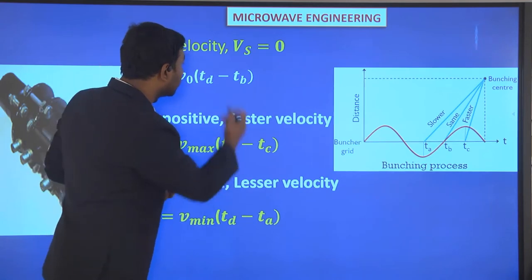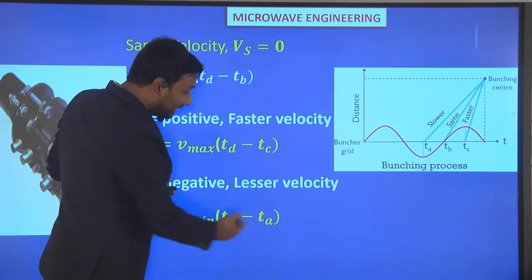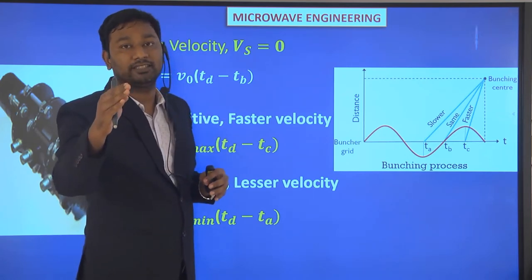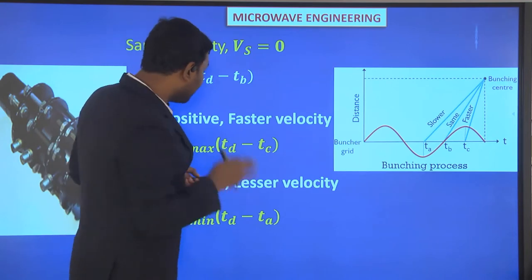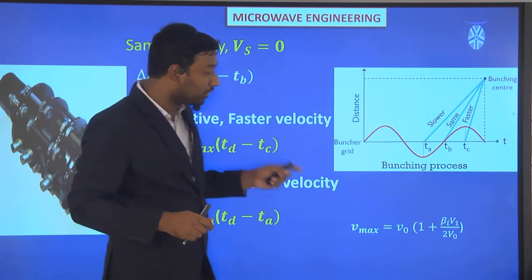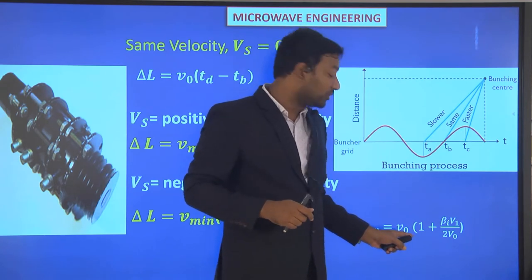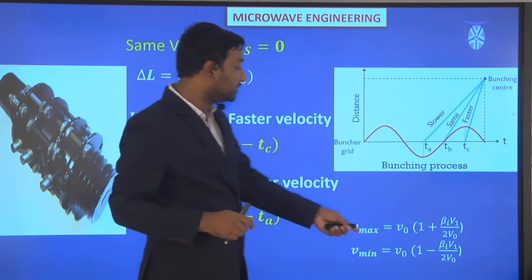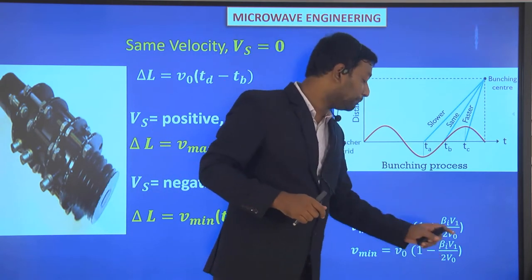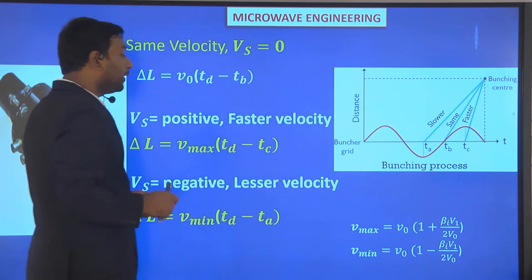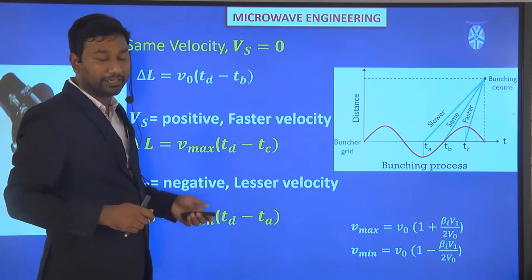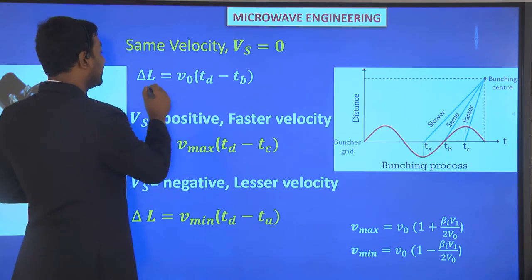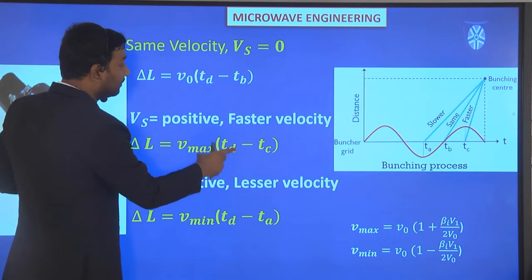We try to equate all conditions at the same point. We calculate at what instant of time all electrons bunch at the same location. First, placing the value of Vmax — the maximum modulated velocity V0(1 plus β_i·V1 / 2V0) — and Vmin equals V0(1 minus β_i·V1 / 2V0) into their respective equations, we reach three equations.